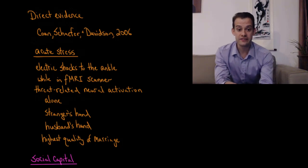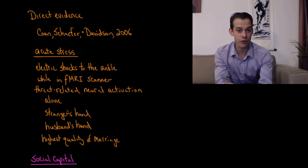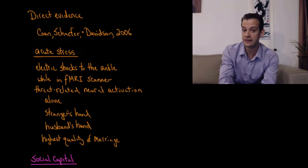And what the researchers found was that this threat related neural activation was highest in the group of women that were alone. Then it was reduced in the women who were able to hold the stranger's hand. And then it was lowest when they were able to hold their husband's hand.